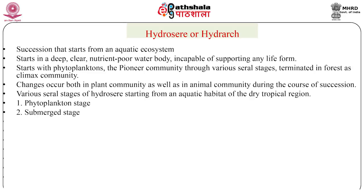Submerged stage. This new habitat, which tends to be a little shallower, allows penetration of light. Shallow regions become more suitable for the growth of rooted submerged hydrophytes — first, deep-water submerged hydrophytes such as Potamogeton, Najas, and Chara, followed by shallow-water submerged hydrophytes such as Hydrilla. Some small animals also invade and colonize. These plants and animals bring about further build-up of the substratum through death and decay, decreasing the depth of the water level so the pond becomes shallower, more turbid, and nutrient-rich, creating a new habitat for floating hydrophytes.